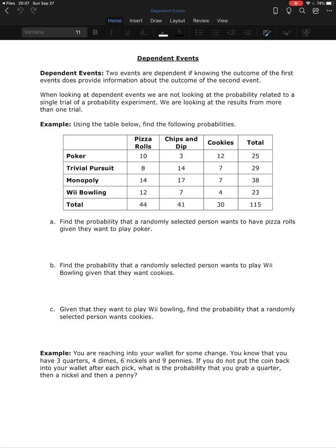So here we have another contingency table. The first question tells us to find the probability that a randomly selected person wants to have pizza rolls given they want to play poker. So here we see this new word given. When we see the word given, that means we have a dependent event. And it's dependent on whatever follows.